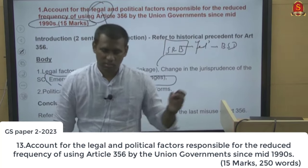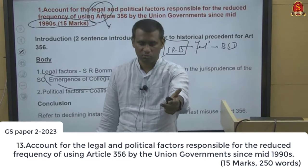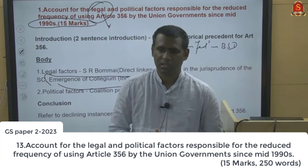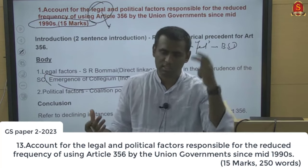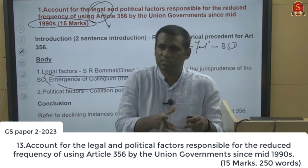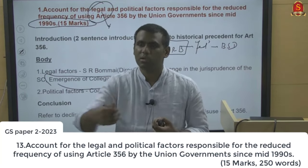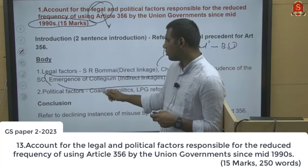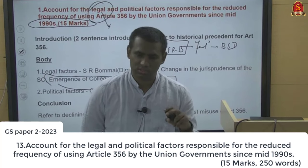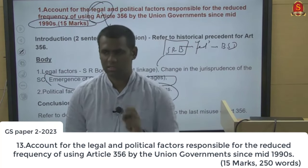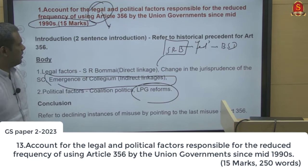For political factors: the 1990s coalition era meant cooperative federalism at its best — the center could no longer dictate to states, as regional parties won significant seats in both Lok Sabha and Rajya Sabha, weakening Congress as the dominant central party. The LPG reforms also dismantled the license raj, giving states more autonomy. Both factors contributed to the reduction in misuse of Article 356.